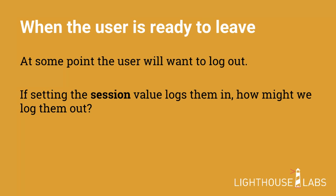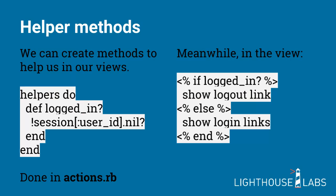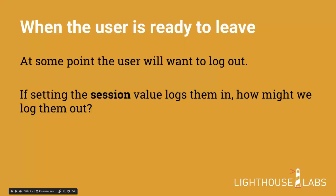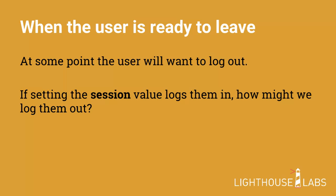When the user is ready to leave, we have this user ID stored in the session — this is what the helper method uses to determine if the user is logged in. If we want to log this user out, we simply clear the session; the session no longer exists. You have two options: you can assign that value stored in the session to nil — remember, sessions is just a hash — or you can call session.clear.